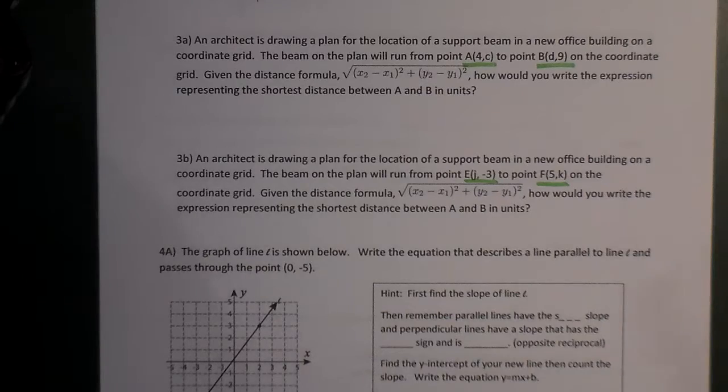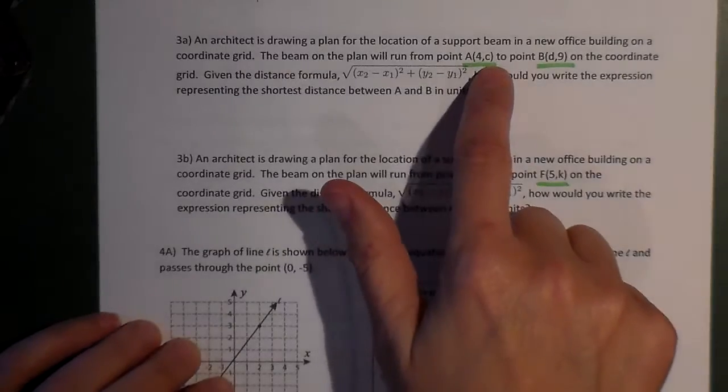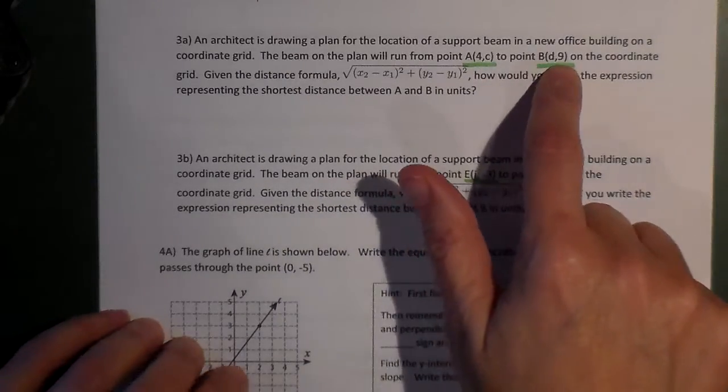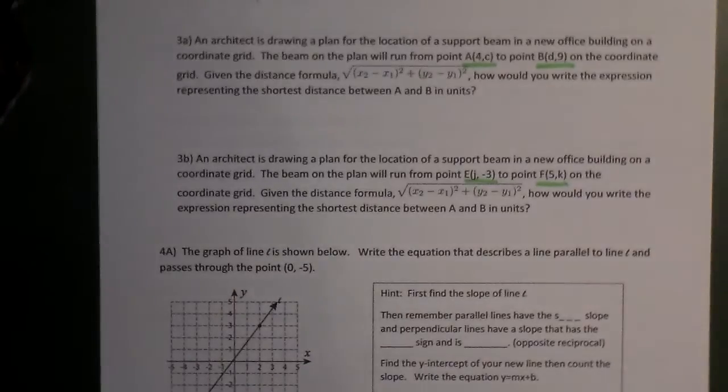Remember, variables are just placeholders. They're numbers. There's a number there, we just don't know what it is. That could be 4, 5, negative 7, 9. We just don't know what C and D are right now.